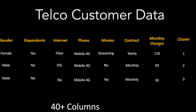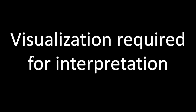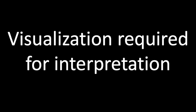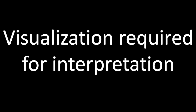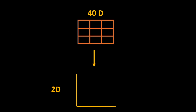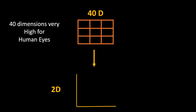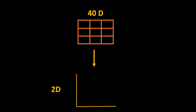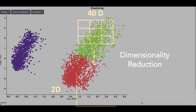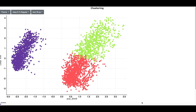Let us start with the first technique of dimensionality reduction. In order to ensure that the clustering makes sense we need to visualize the cluster formation. As we have 40 plus dimensions in the customer data and the human eye cannot see very high dimensional data, we need to convert our data to 2D using dimensionality reduction. Here is the clustering result shown on a 2D scatter plot.